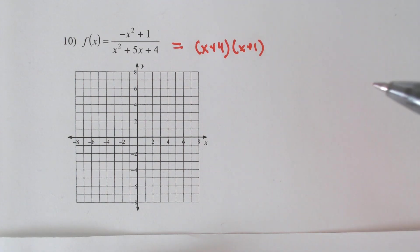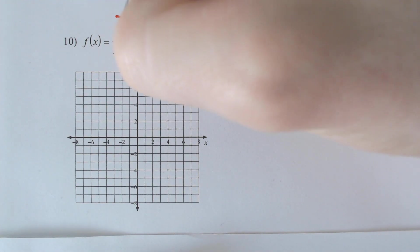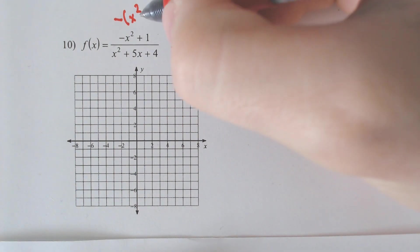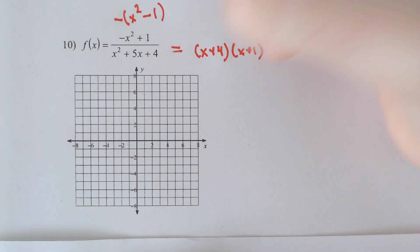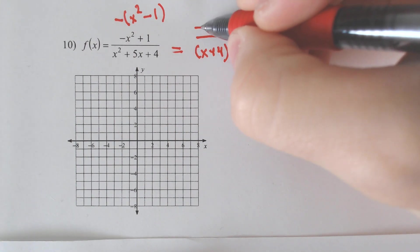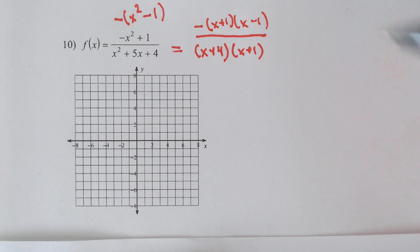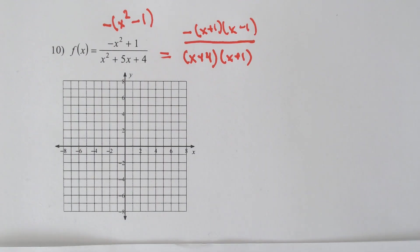And the top of the fraction, the first thing I would do is take out the negative because who wants a negative x squared, and make that an x squared minus 1, which then would factor into x plus 1 and x minus 1, because that multiplies to 1 but adds to 0.